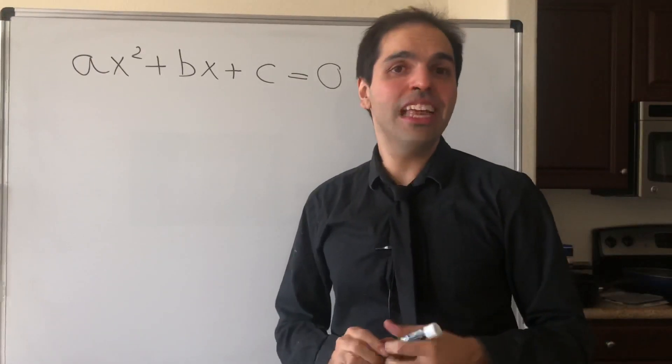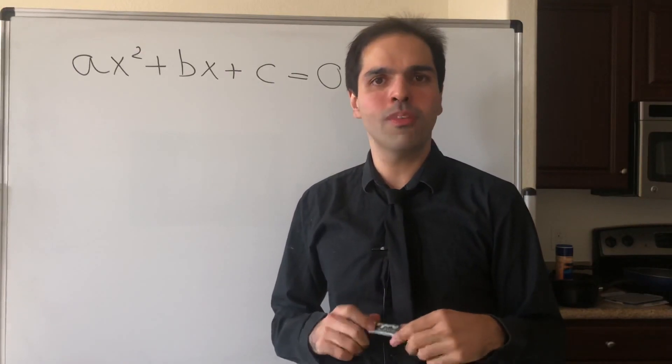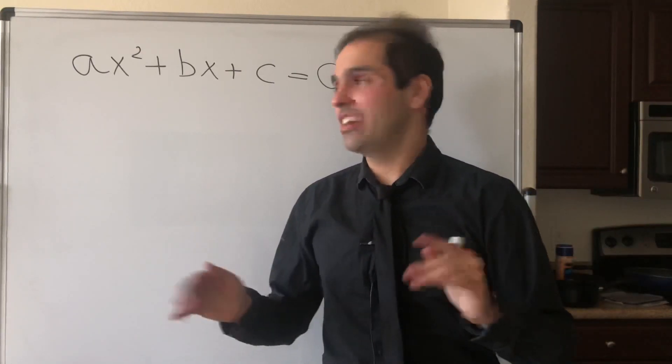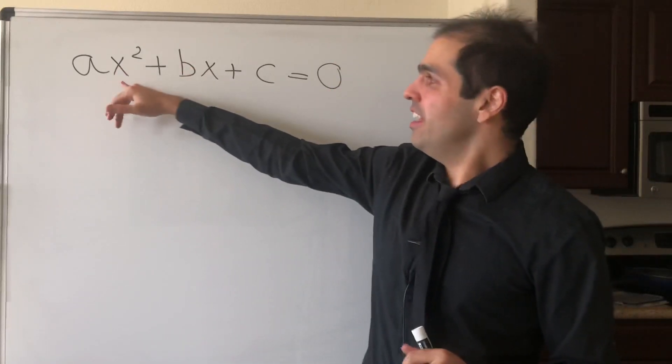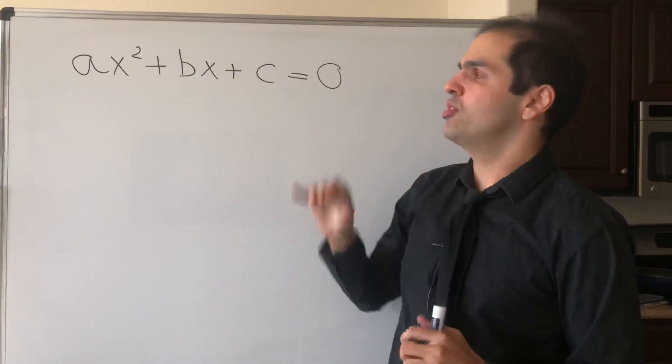All right, thanks for watching. Today I would like to use Poisson-Lowes method to derive the quadratic formula, because I'm sure the previous video didn't make sense at all. In particular, let's find the root of ax² + bx + c = 0.